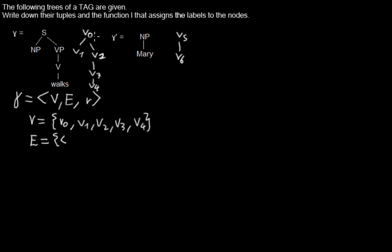So for this edge here, I can do it in color. This edge here will be from V0 to V1. Then we will have this edge, which will be from V0 to V2.